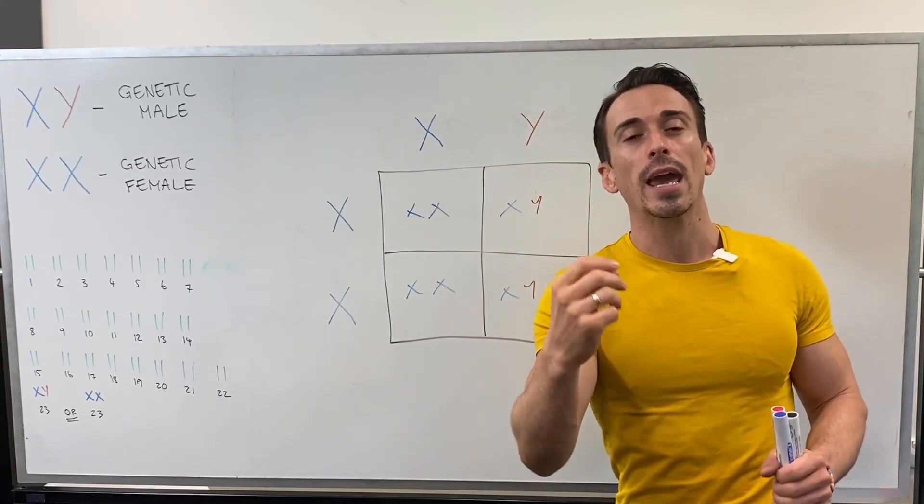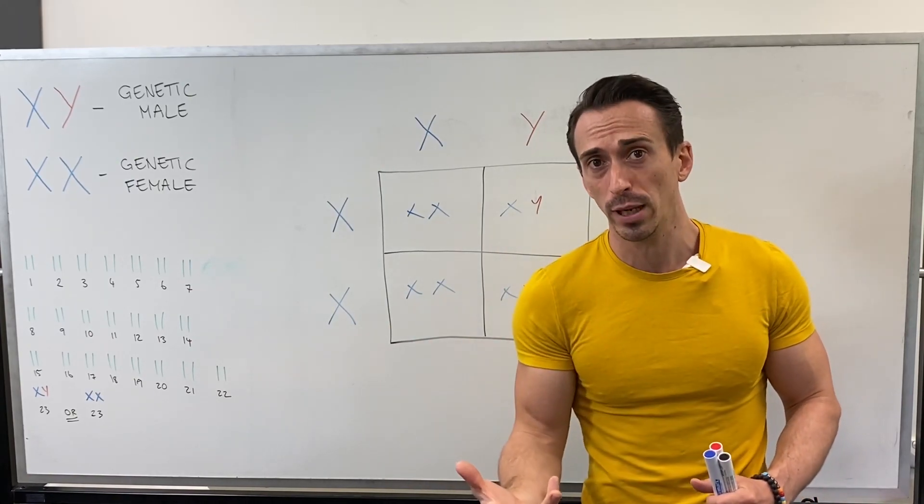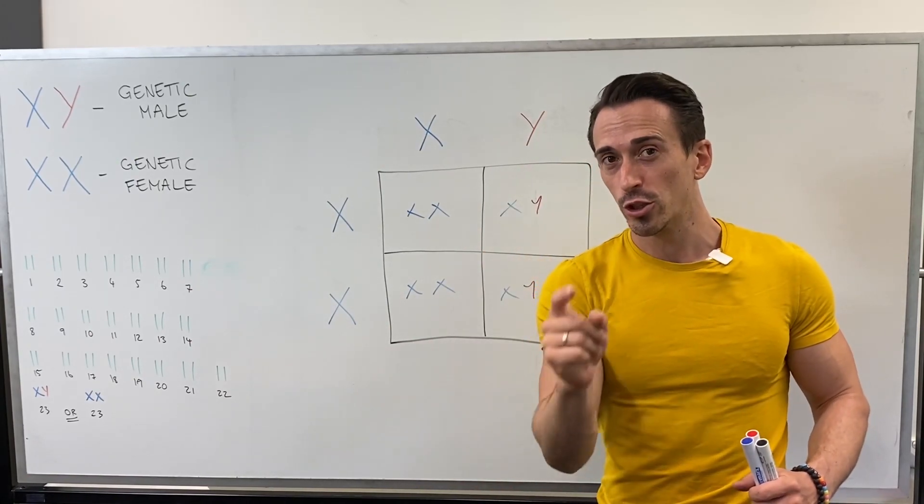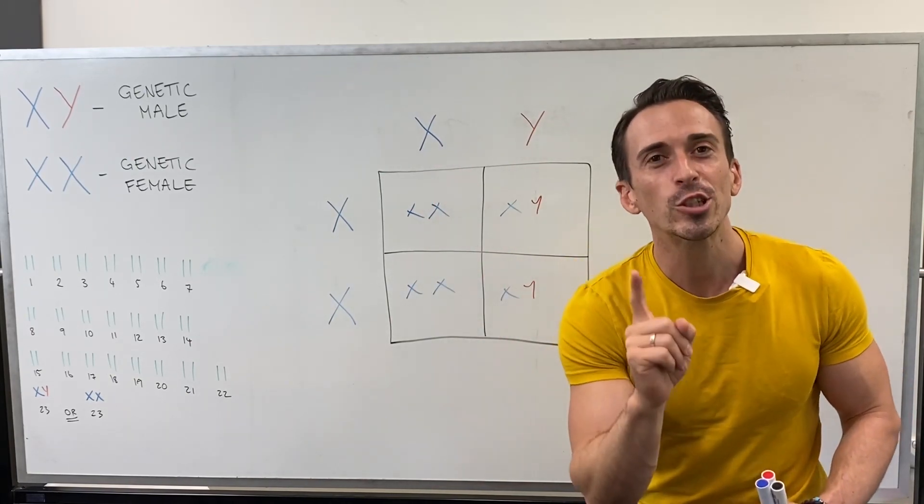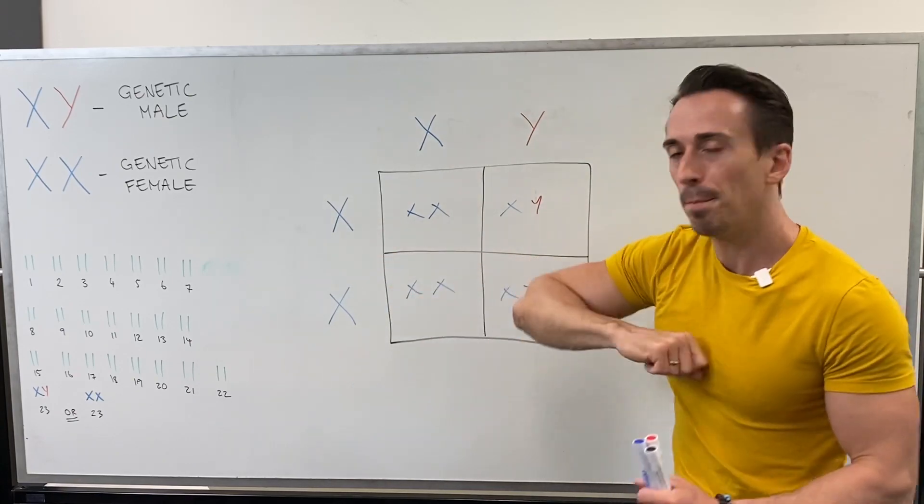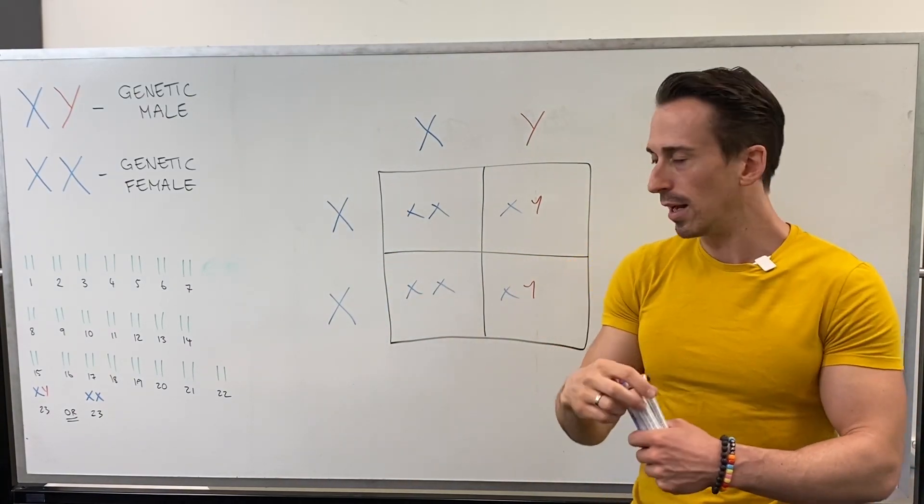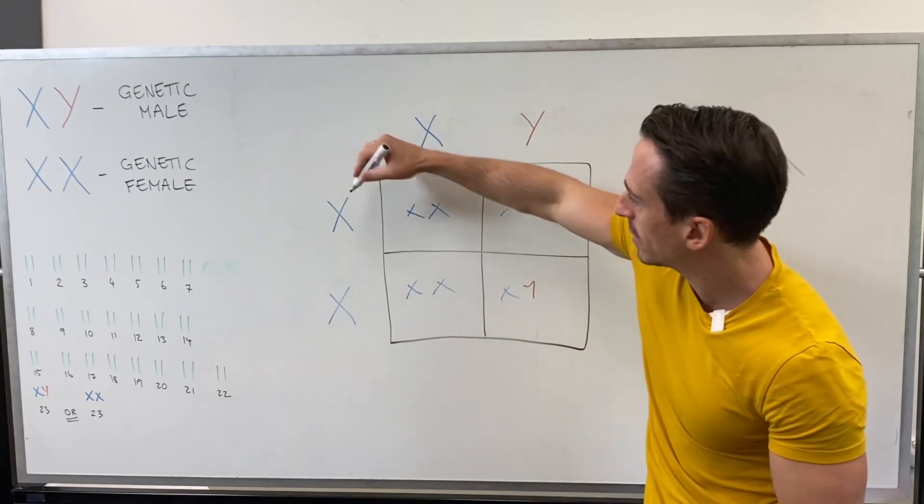Let's talk about diseases like haemophilia, where you get cut, can't stop bleeding. This is a recessive trait on the X chromosome. So let's just say mum is a carrier for haemophilia.